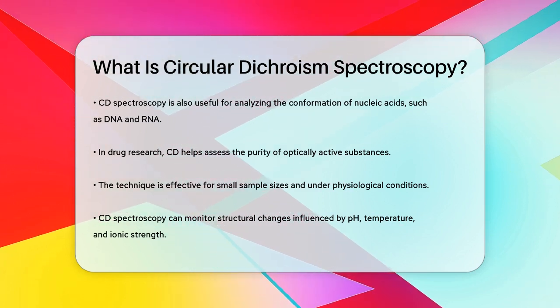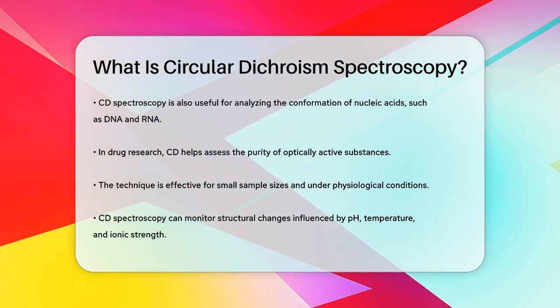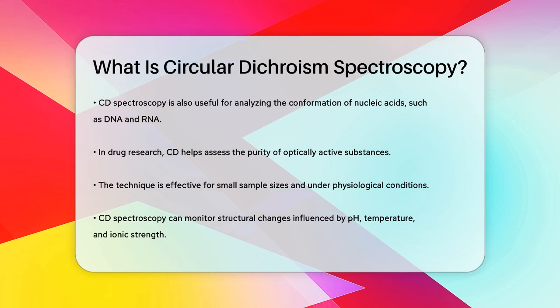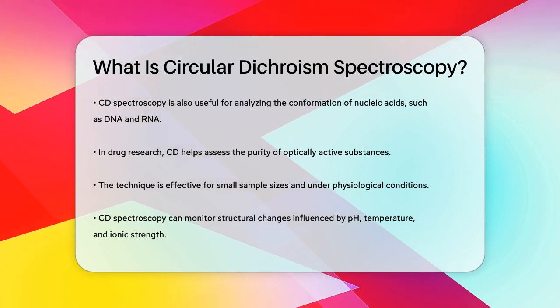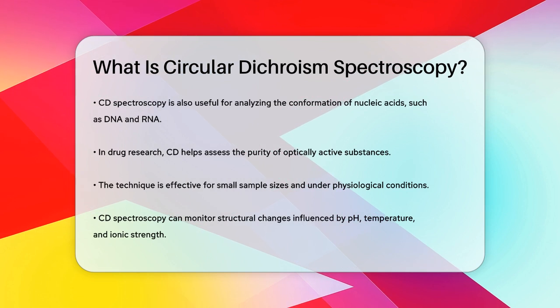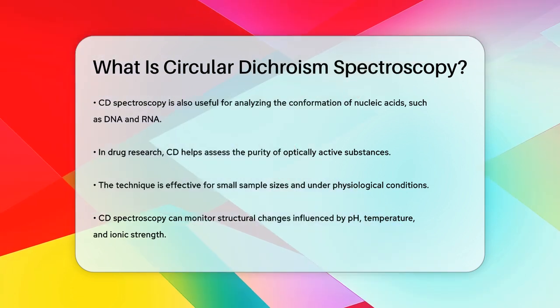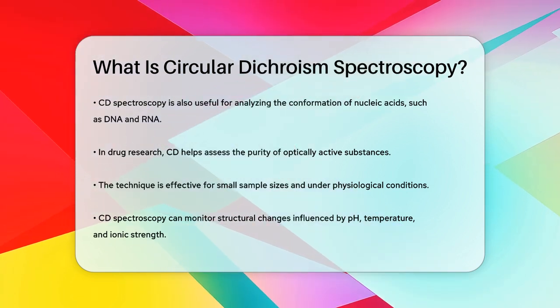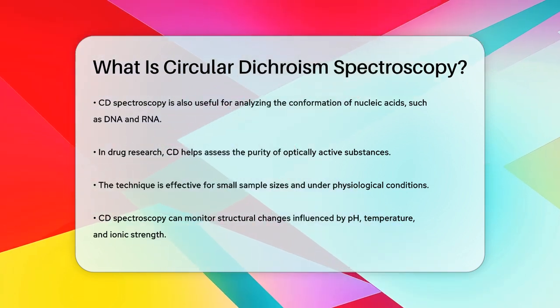So, circular dichroism spectroscopy is essentially a way to see how chiral molecules interact with light, helping us understand their complex structures and behaviors in detail.